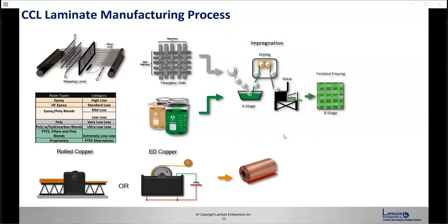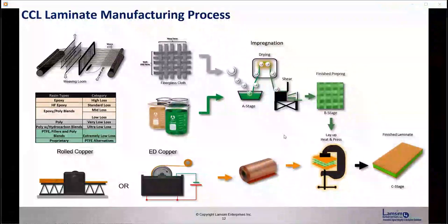Then there's the copper foil. There's two different types used in the industry. There's rolled copper and electro-deposited copper. The rolled copper tends to be smoother and more expensive compared to the ED copper. Then the copper gets, sheets of copper gets put on each side of the prepreg sheets, and under heat and pressure, you end up with the finished laminate.